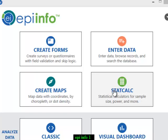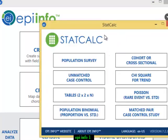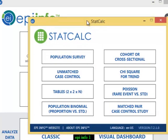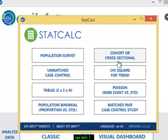For today we will use this option, StatCalc. From here you will choose if your research is just a survey, cohort or cross-sectional study, case control or whatever your research is.